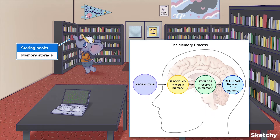Storage involves retaining encoded information in your mind, much like this elephant storing a book on these shelves that retain tons of information. Memory storage can be long term or last for less than a second, but more on that another time.